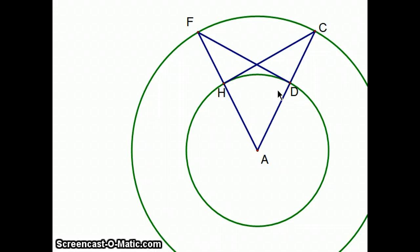But FDA is a right angle because we created it to be a right angle so that FD would be tangent to the smaller circle. Well, that means AHC is a right angle. And if AHC is a right angle, then HC is tangent.